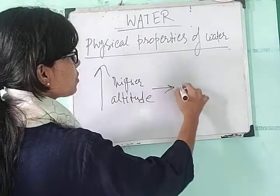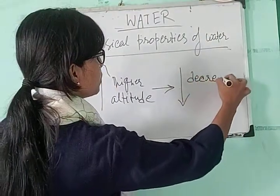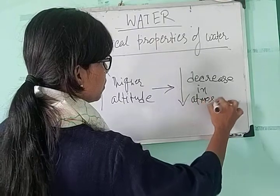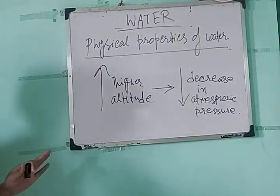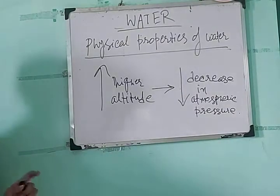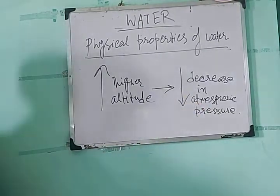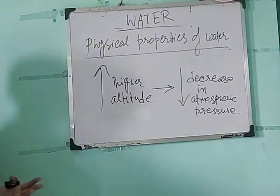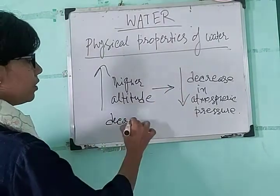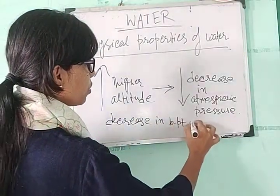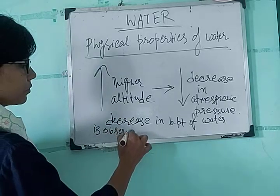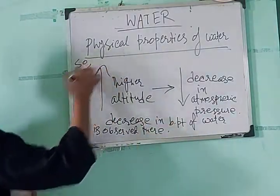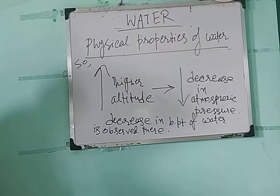Higher altitude means decrease in atmospheric pressure. The boiling point of a liquid is directly proportional to the atmospheric pressure. So if you increase the atmospheric pressure, boiling point will increase. If you decrease the atmospheric pressure, boiling point will decrease. A decrease in the boiling point of water is observed there, so water boils at a temperature lower than 100 degree Celsius.